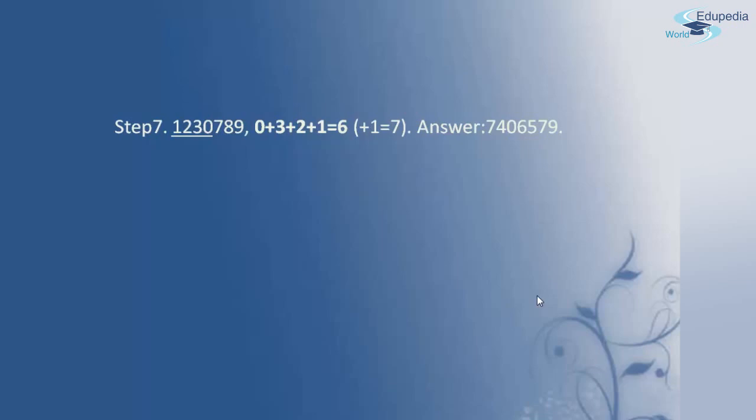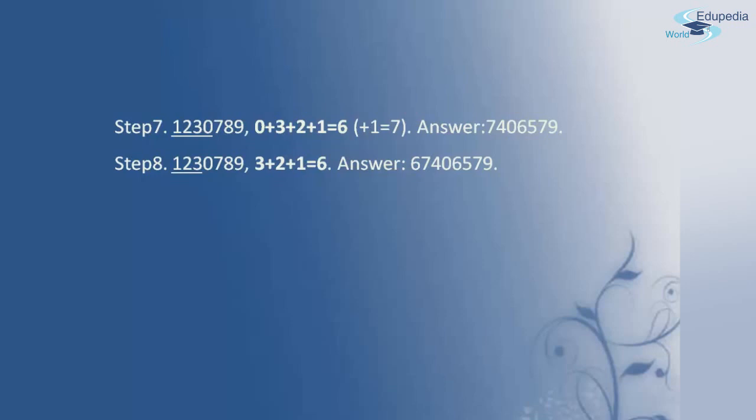Moving to the next step, here I have to add only 3 digits because there are no more digits further. By adding 3, 2 and 1, I get the sum 6. This 6 is written in the answer. In the answer, I now have the digits 6, 7, 4, 0, 6, 5, 7 and 9.